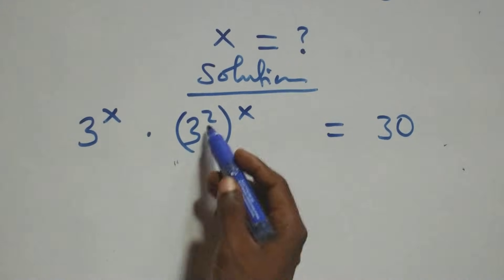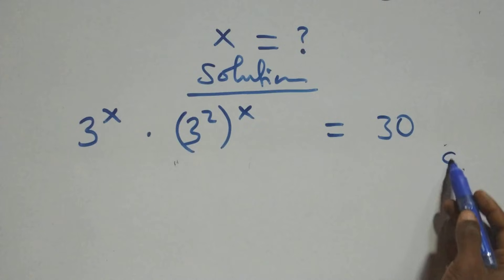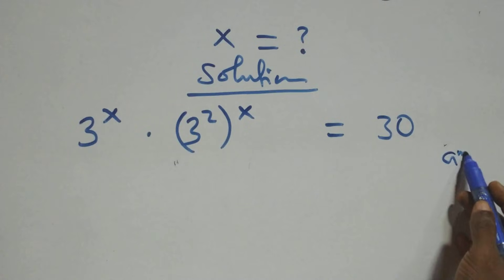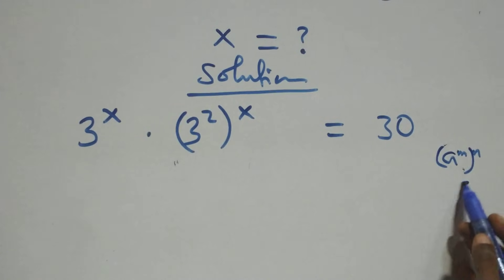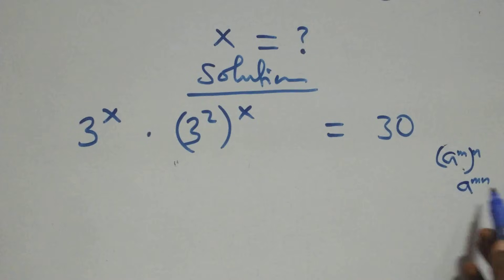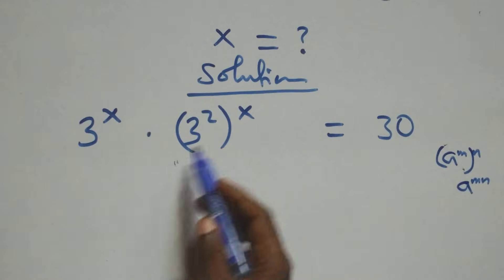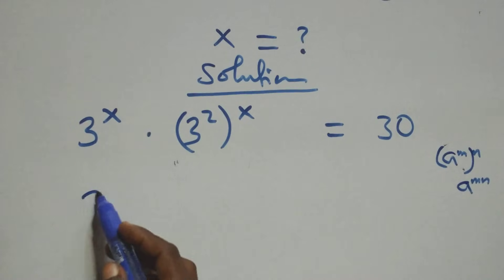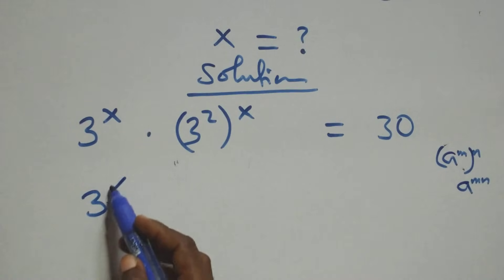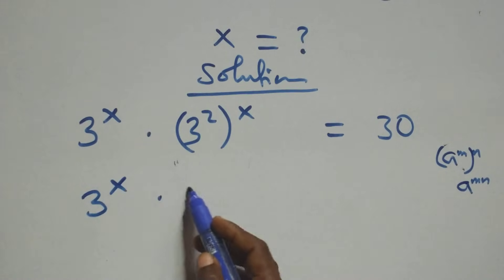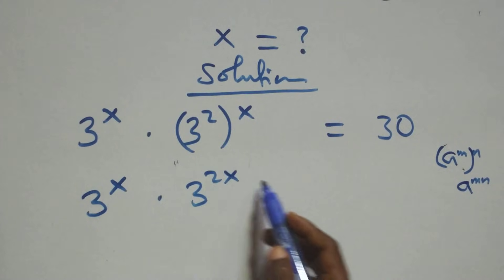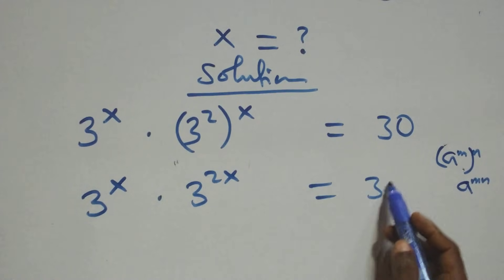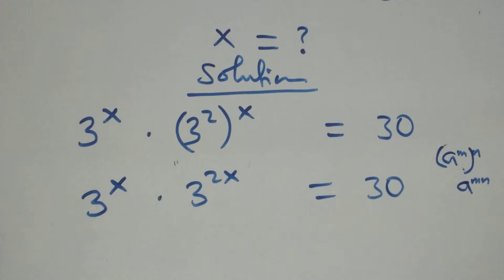From here, following the rule that A raised to power n raised to power m is the same as A raised to power mn — the power multiplies — we have 3 raised to power x times 3 raised to power 2x equals to 30.